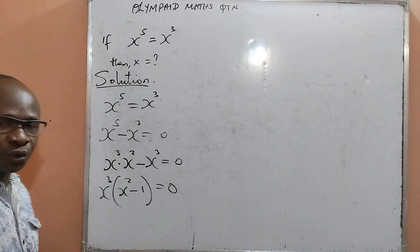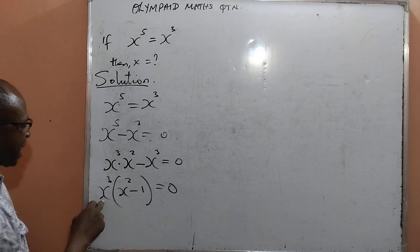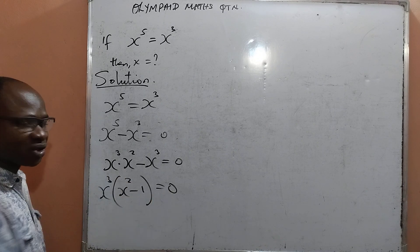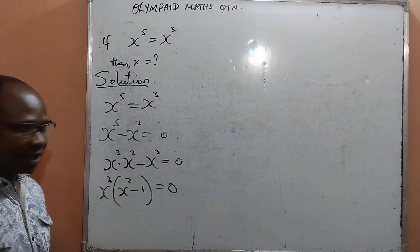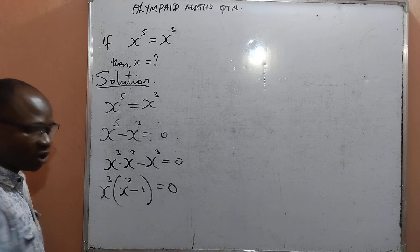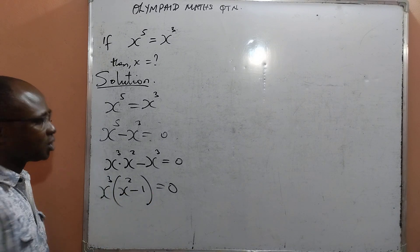By the product rule, x raised to power 3 is equal to 0, and also x raised to power 2 minus 1 is equal to 0.